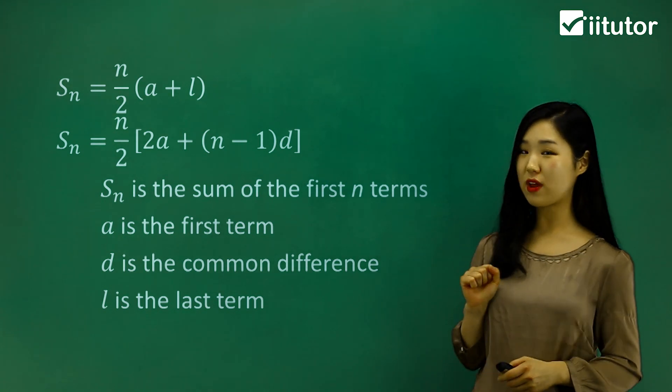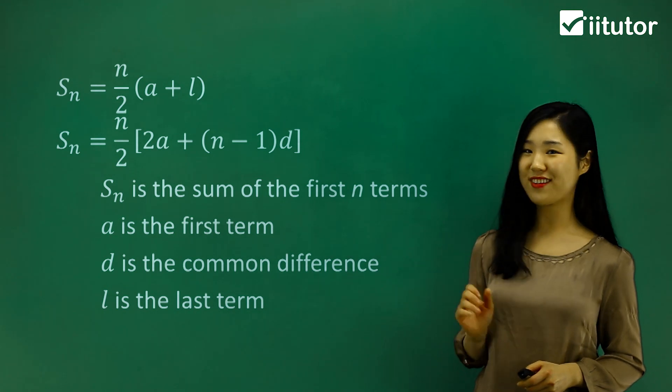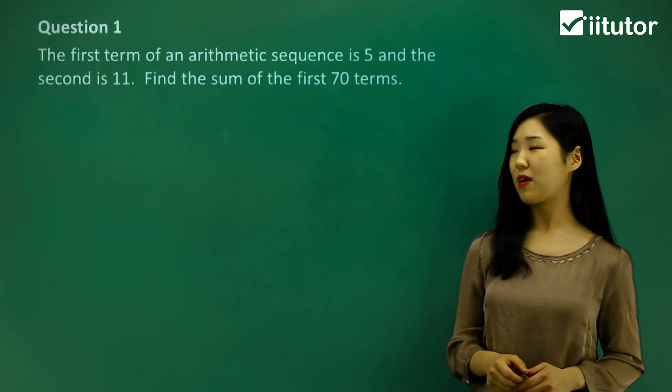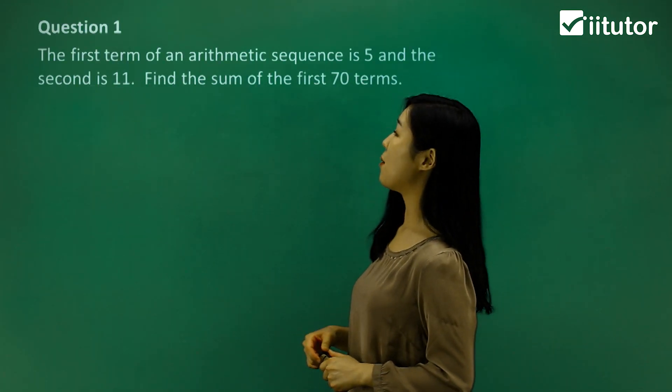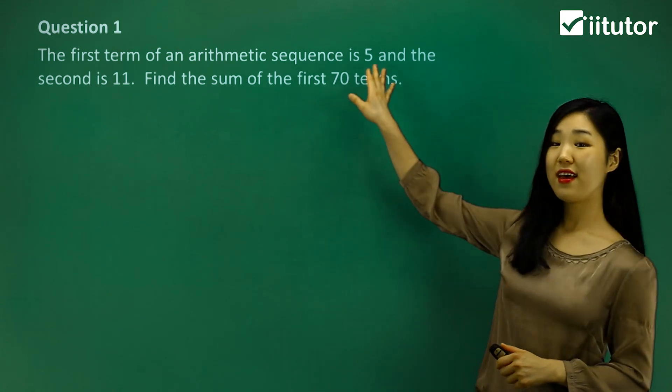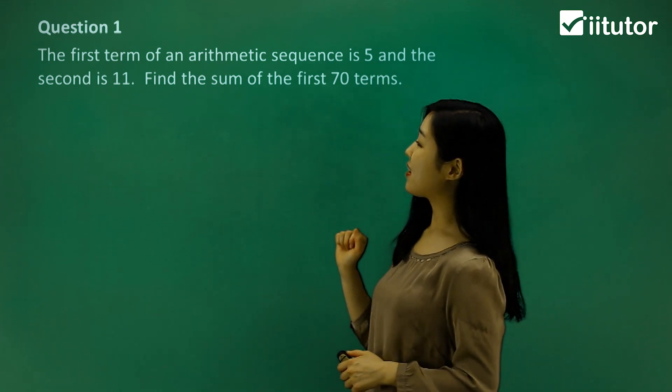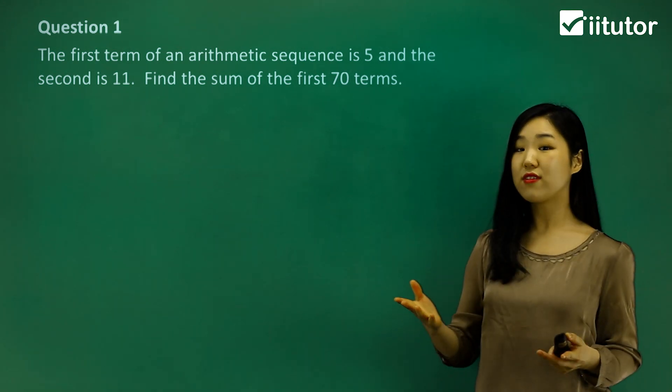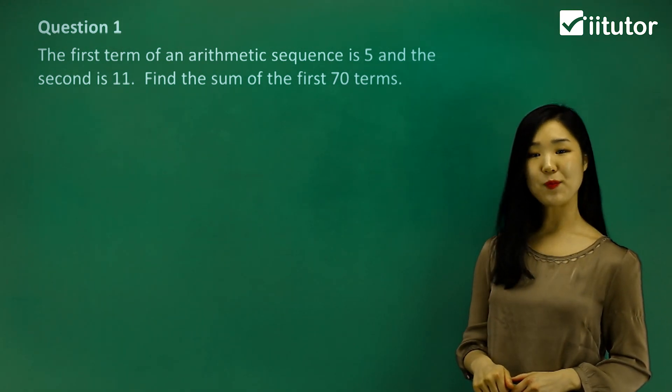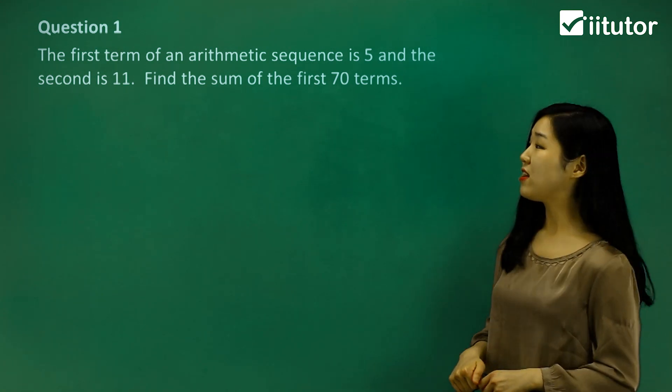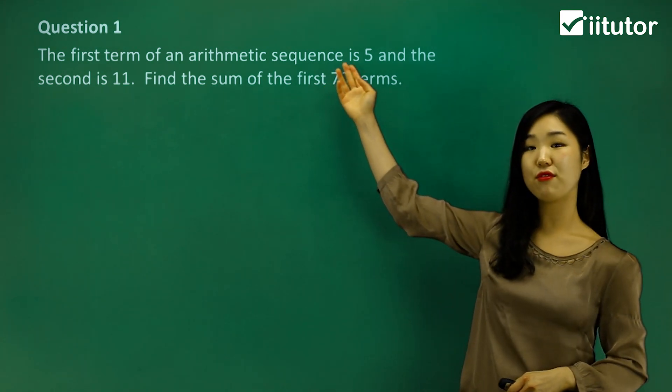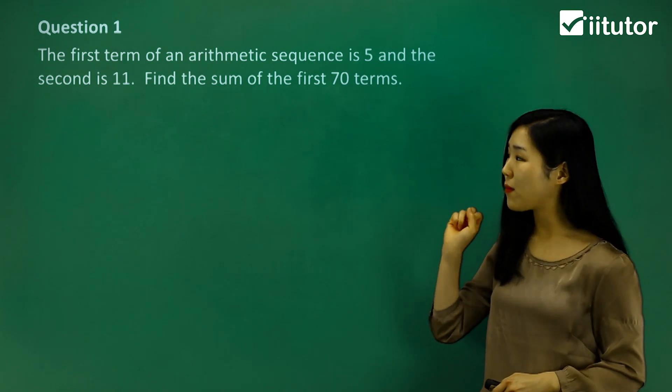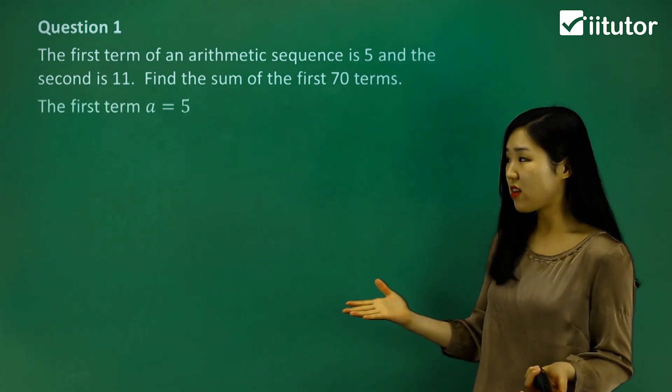So let's try to remember those two and use those to answer some questions. Question one says the first term of an arithmetic sequence, it tells us that it's 5, and the second term is 11. Find the sum of the first 70 terms. So they give us some information here and we're going to utilize it.